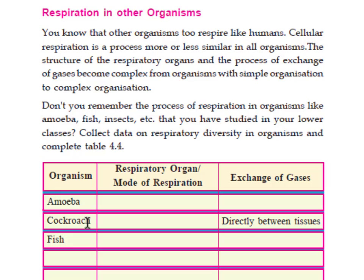The next organism is cockroach. The respiratory organ of cockroach is the trachea, and its method of exchange of gases is directly between tissues. The respiratory organ is the trachea and exchange of gases occurs by diffusion.